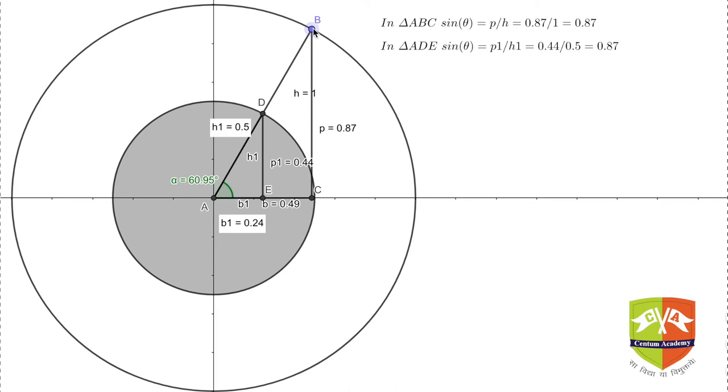This demonstration was to describe to you that sine theta value doesn't change even if theta is in different triangles. Likewise, all of the trigonometric ratios will not change till the value of theta is the same, whether it is in a smaller triangle or any other bigger triangle.